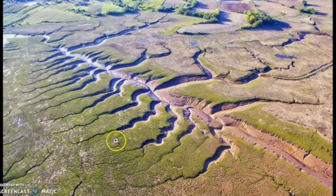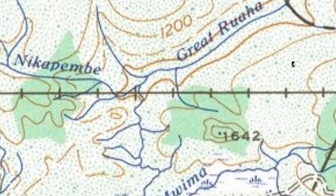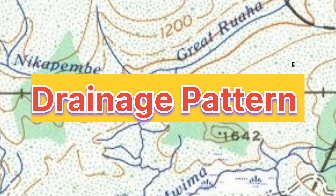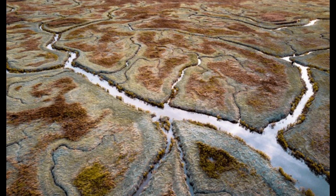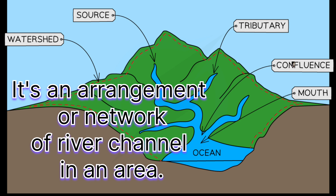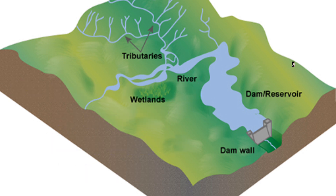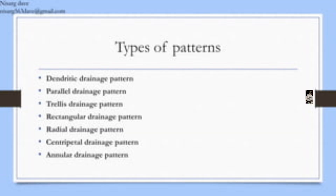In this video we will explore different types of drainage patterns and how you can find them. A drainage pattern, or river system, is the arrangement or network of river channels in an area. It is influenced by the topography, geology, and structure of the land.